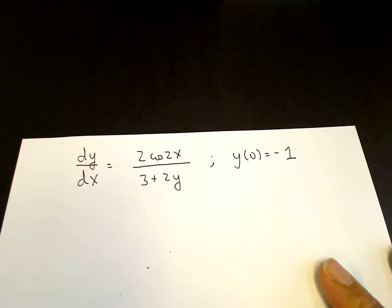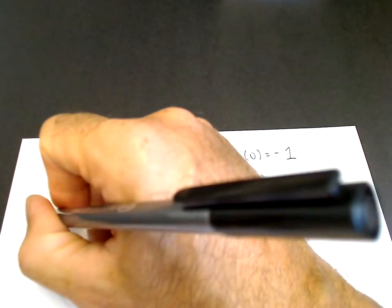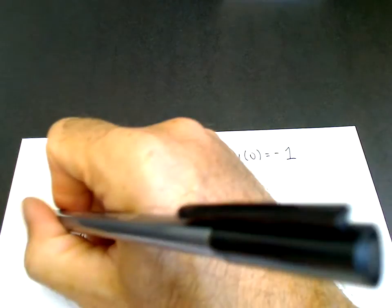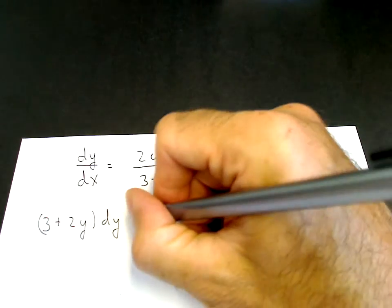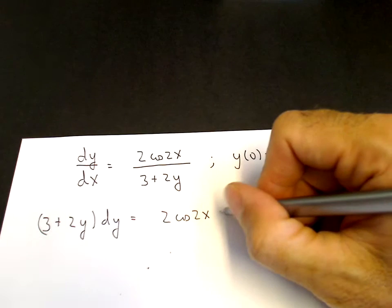So this equation is separable. Separable means now that treating dy dx as a fraction, we can write this as a function of y times dy equals a function of x times dx. Here it's very easy to do just by cross-multiplying.